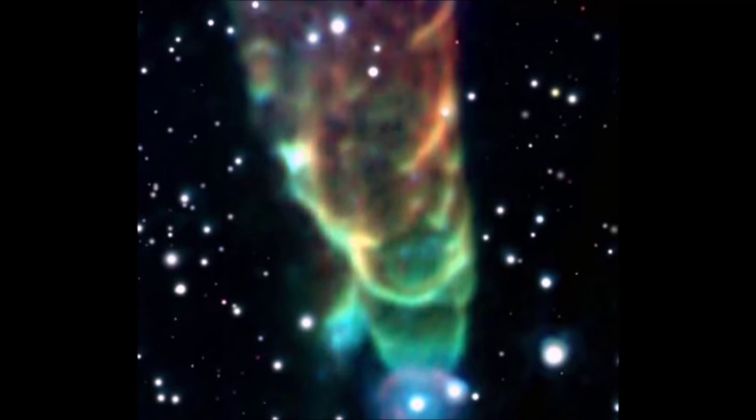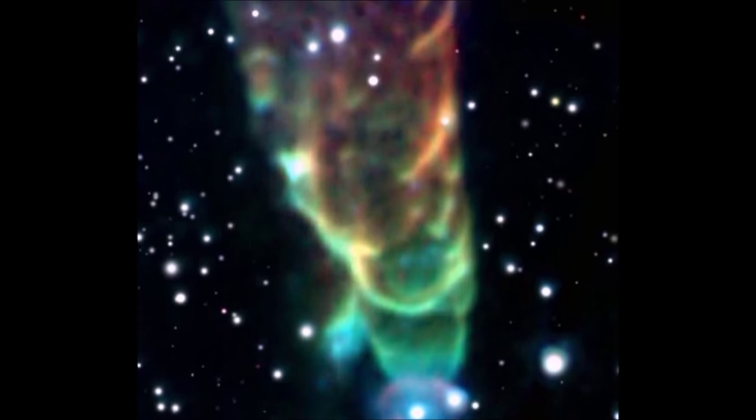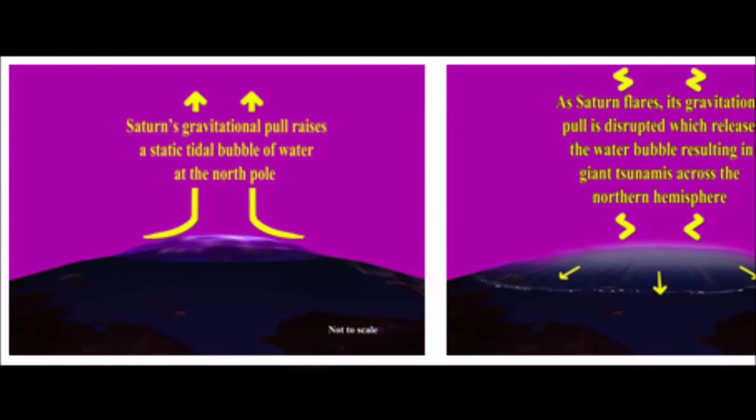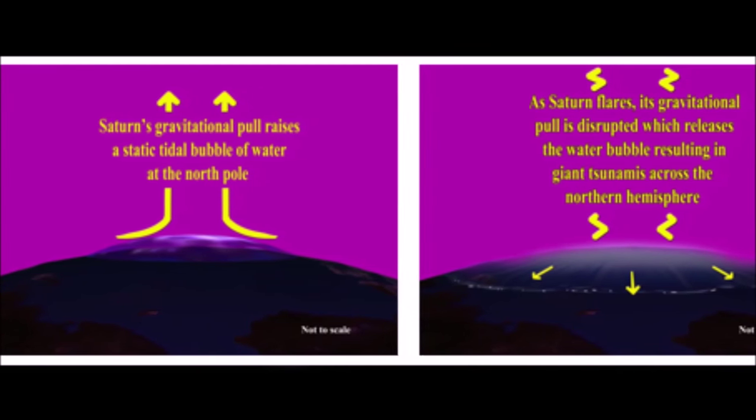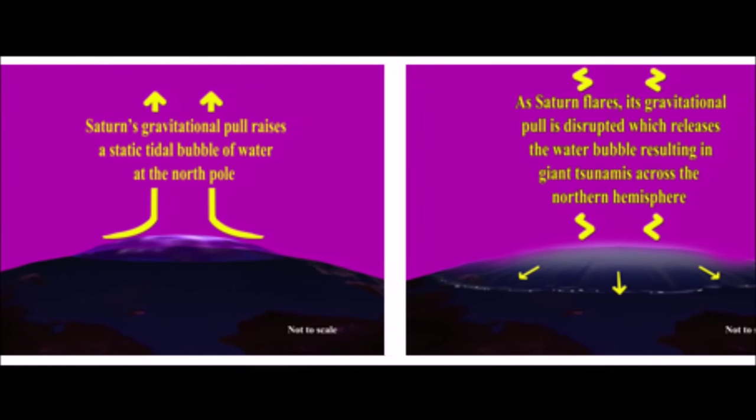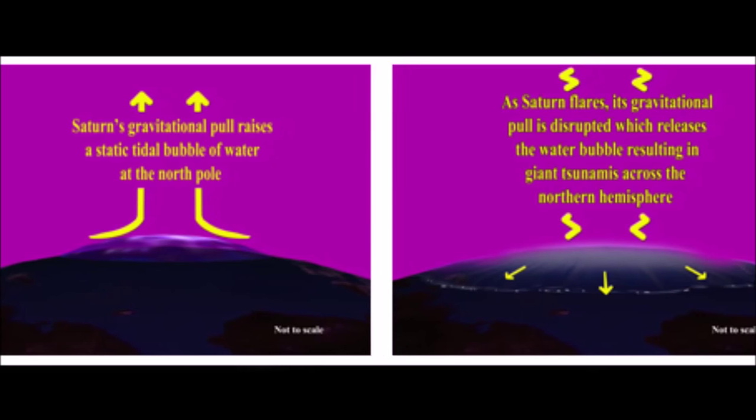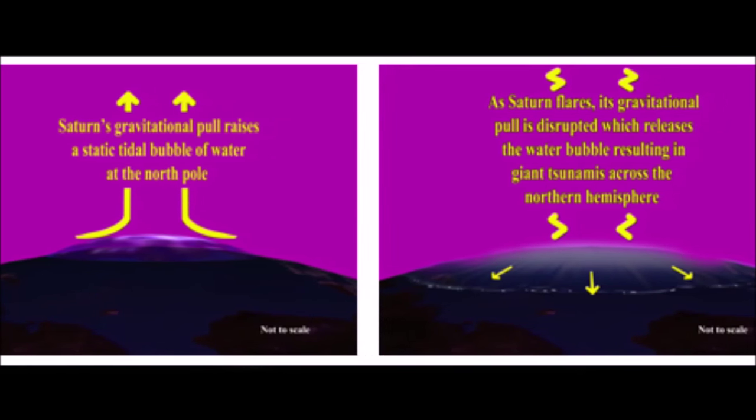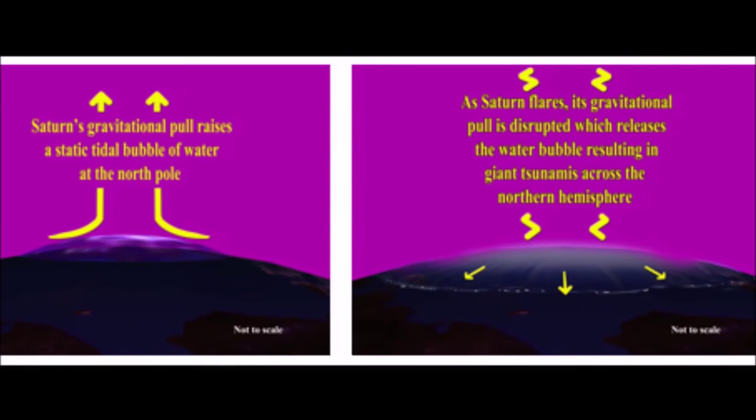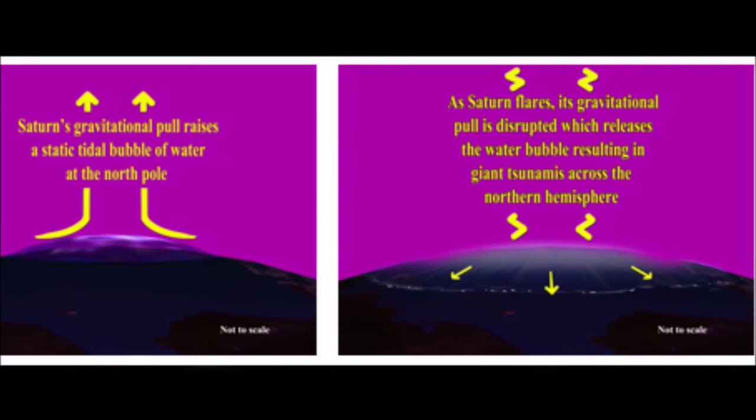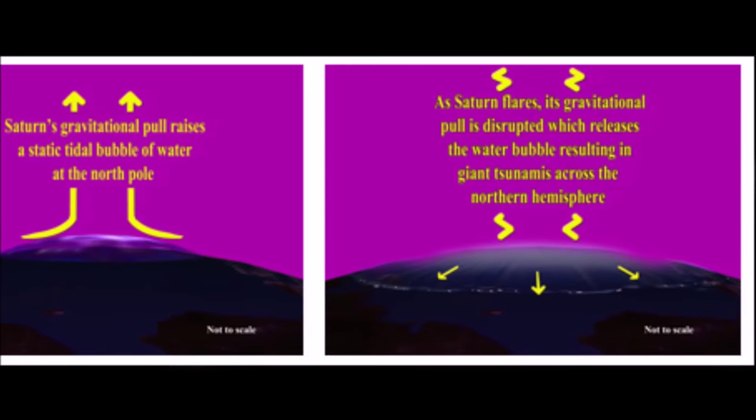Due to Saturn's polar position in the heavens, a mound of water would have previously formed at the north pole due to Saturn's gravitational effect, in the same way that the moon today affects tides, but in a stationary way. The sudden flaring of Saturn would have disrupted this gravitational pull and released the mound of water where it would have spread out destructively over the northern hemisphere.